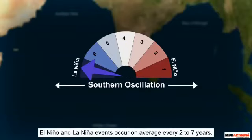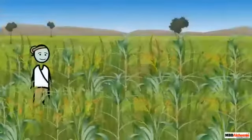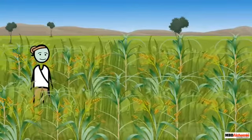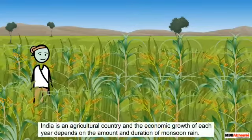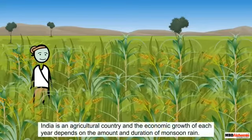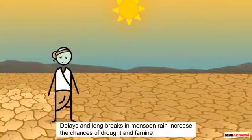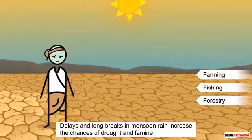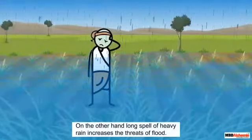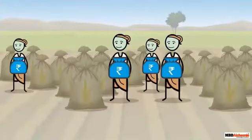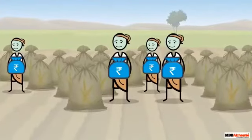The arrival of monsoon rain in India is the most satisfying and joyous moment for the people of India. This is because India is an agricultural country and the economic growth of each year depends on the amount and duration of monsoon rain. Delays and long breaks in monsoon rain are dangerous for basic occupations such as farming, fishing, and forestry, as chances of drought and famine increase. On the other hand, a long spell of heavy rain may damage standing crops with increased threats of flood. The secondary sector of the economy, like agro-based industries, also depends on monsoon, as the supply of raw materials is governed by a good spell of rain.